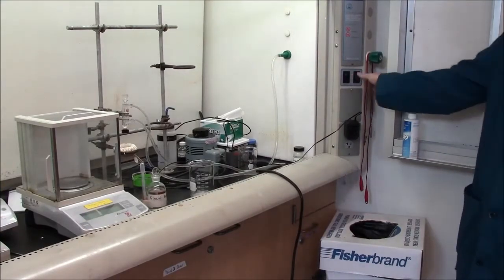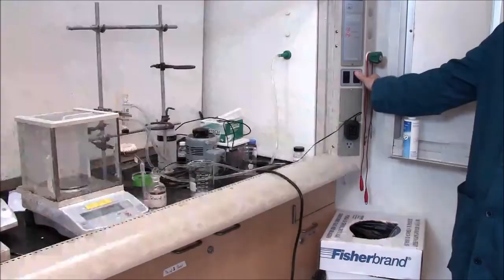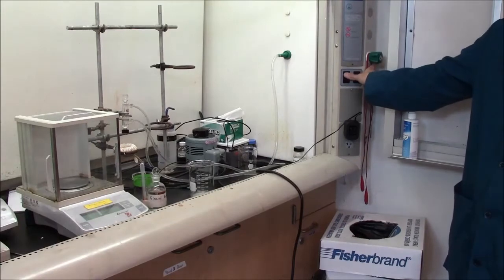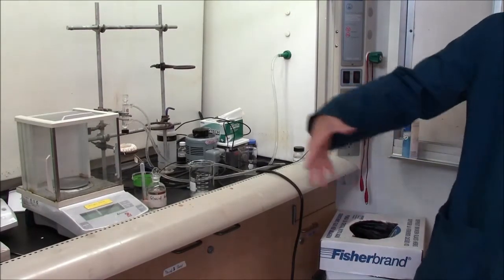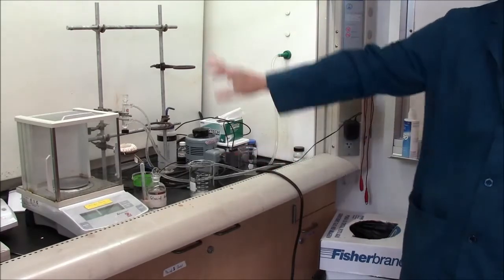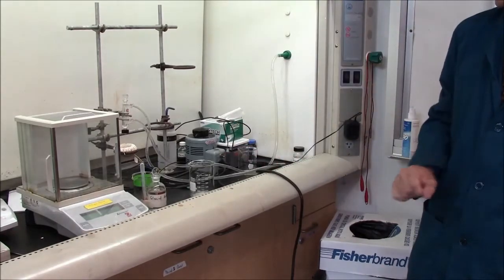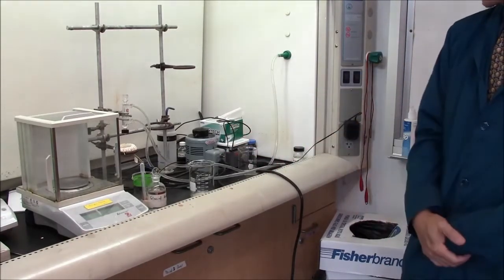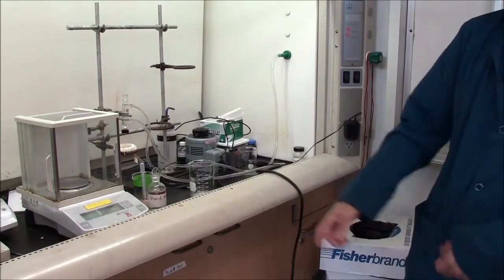The fume hood has two switches, one for light and one for the fan. The fan pulls air from the room and sends it up a smokestack on the roof. This is to keep you safe from any harmful vapors or irritating vapors.